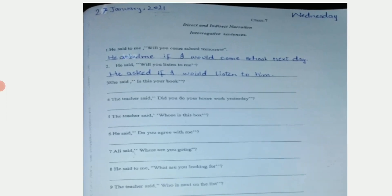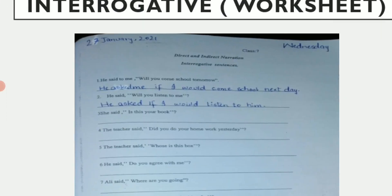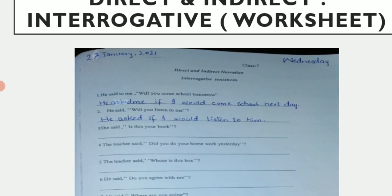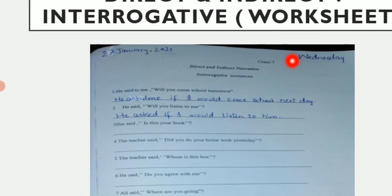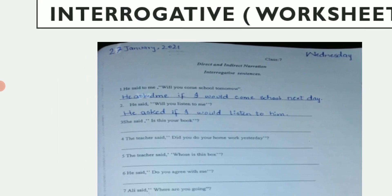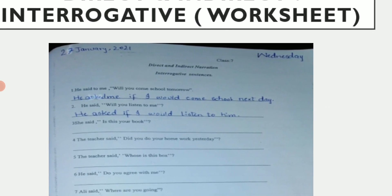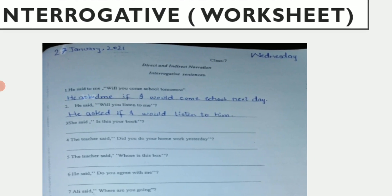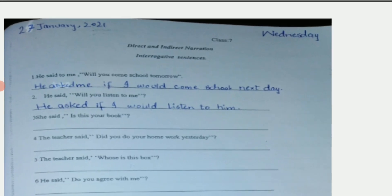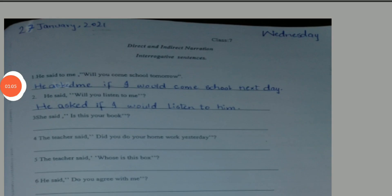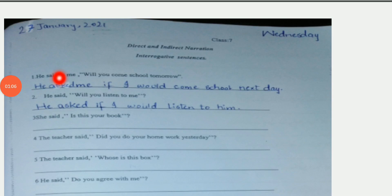First of all, what you have to do is mention the date and day here. It is compulsory to mention the day and date. You can see that I have done two sentences here for you. So let us start the sentences.